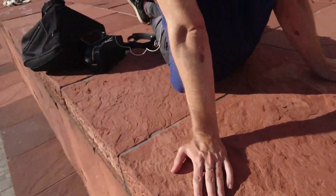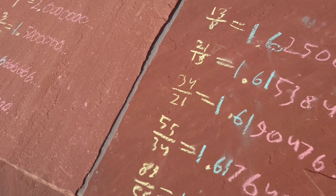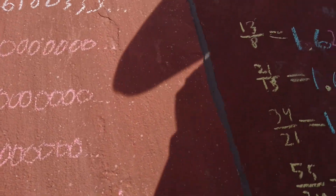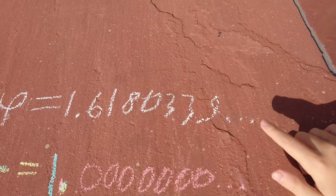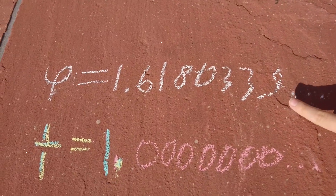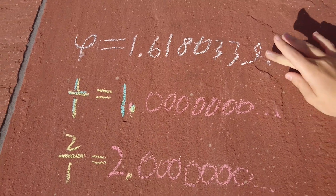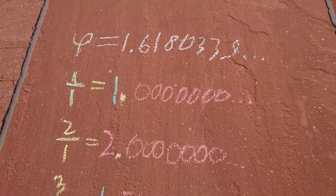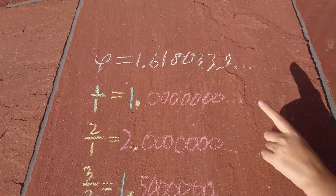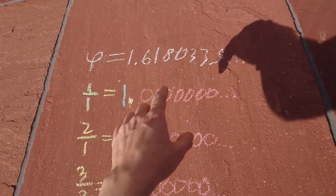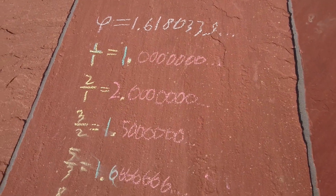Here's where he started. This is the target number — 1.6180339. I put a 9 and got here: 1.6180339. So he got up to six digits correct.